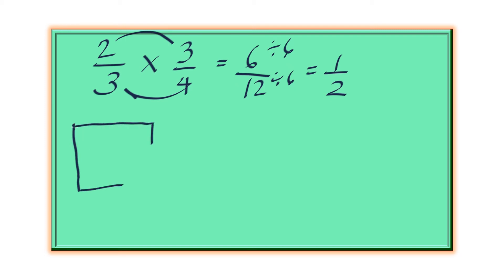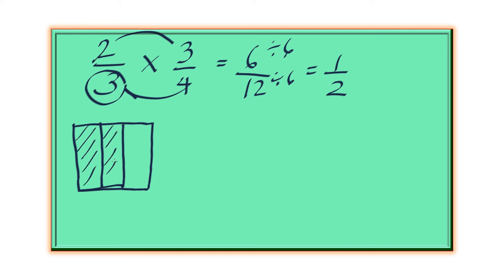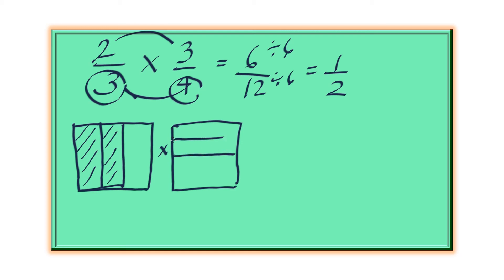So that 2 thirds — denominator 3 is the total number of sections. Let's divide this into three parts. The numerator 2 is the number of shaded regions, so we shade two of them. Then for 3 fourths, the denominator is 4, so we divide this into four sections, and we do it horizontally. Since the numerator is 3, we shade three rectangles out of four.